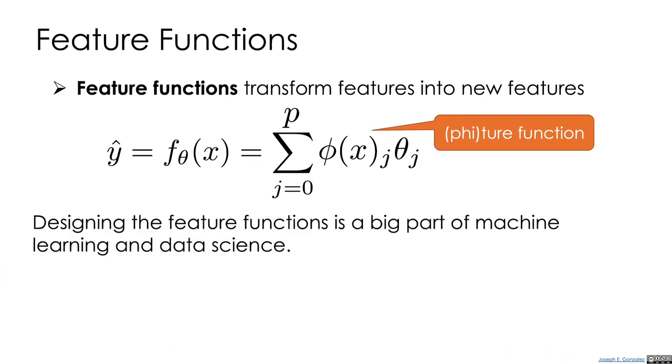The design of these feature functions is a big part of what we do in machine learning and data science, because these features are going to allow us to transform our original data into something that we can more easily model with these linear models. First, they'll allow us to capture domain knowledge.